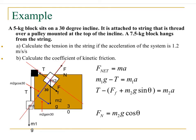For the final problem: a 5 kilogram block sits on a 30 degree incline, attached to a string threaded over a pulley at the top of the incline, with a 7.5 kilogram block hanging from the string. We calculate the tension in the string given acceleration of 1.2 meters per second squared, and the coefficient of kinetic friction. In the diagram, we see the block on the 30 degree incline with the normal force, angle, and gravity shown.